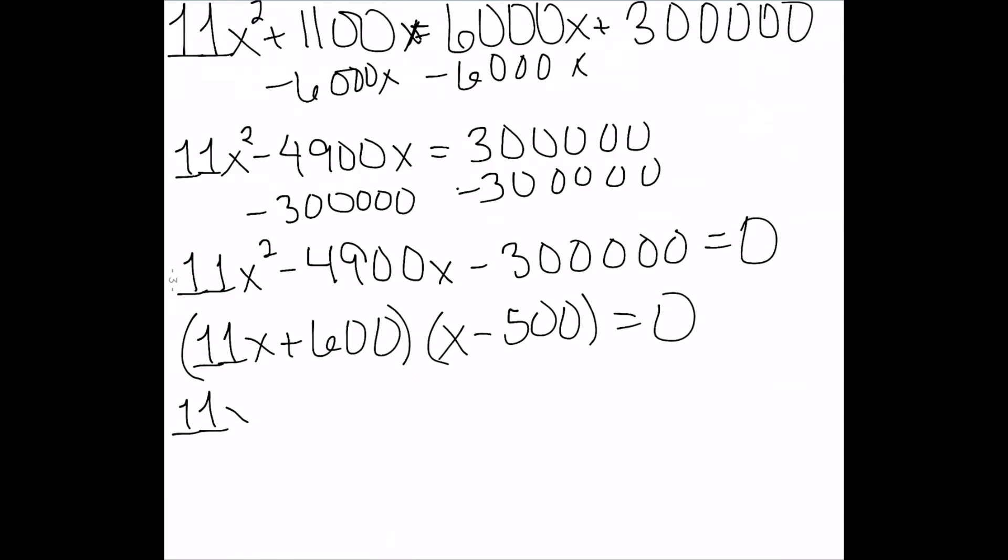So either 11x plus 600 is equal to zero, in which case once I solve this, I get negative 600 over 11.